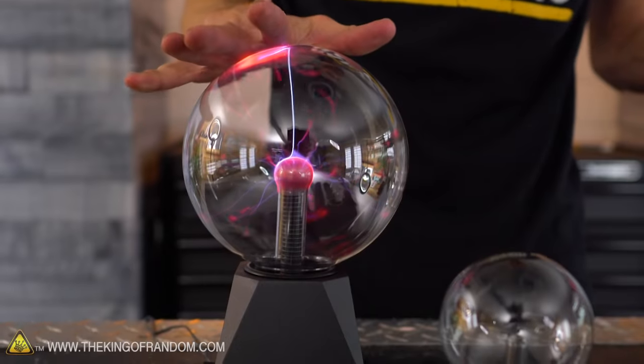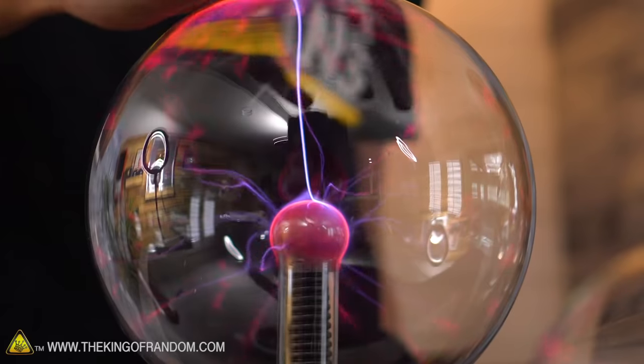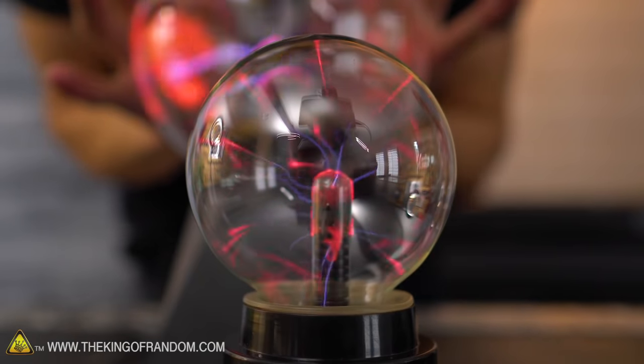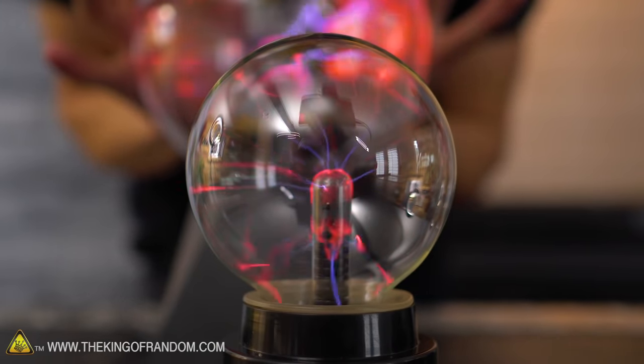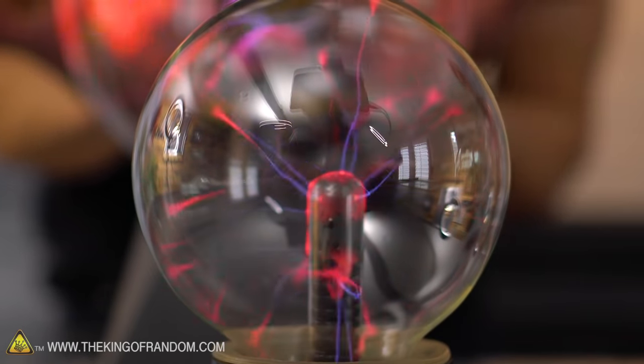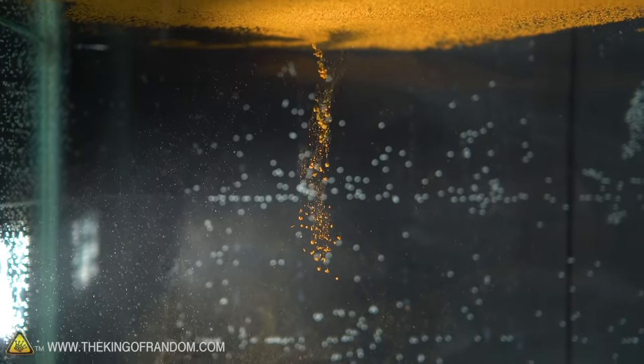So when you put the Tesla coil into that glass ball that's got all of those noble gases, it actually sort of gives those electrons a path to follow, which is that tentacle that you see that's constantly moving. I can't help but wonder if that's what we're seeing is sort of that line of electrons without the big glass ball and noble gases.